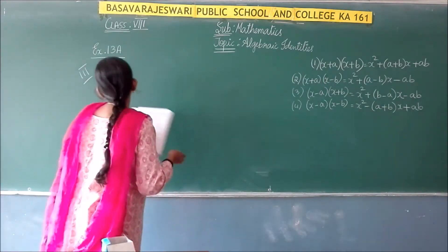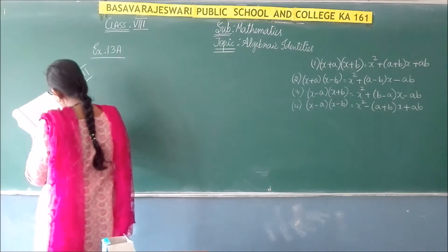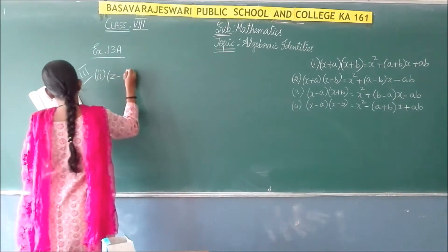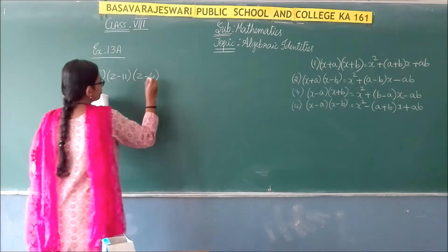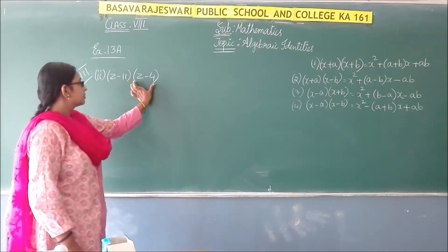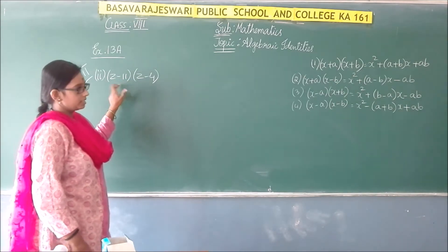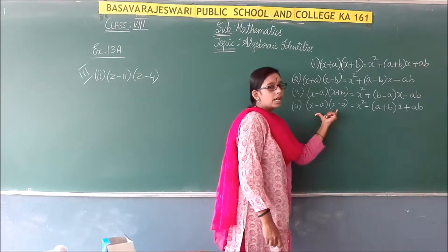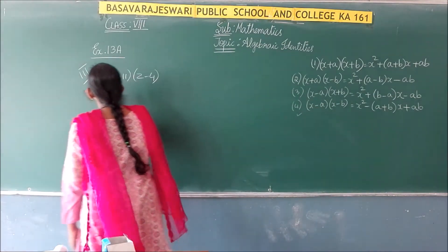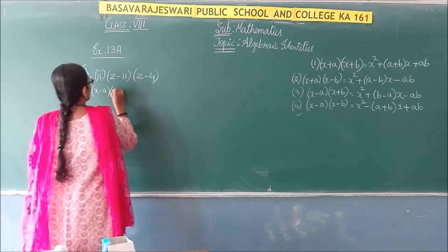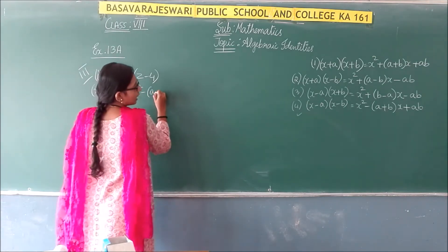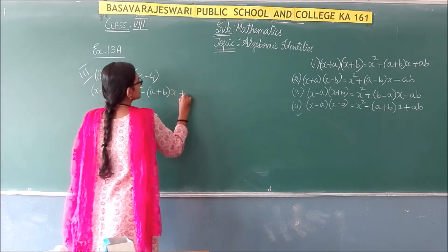Now let us start with the third main. In the third main, I am going to solve the second problem, which is (z - 11)(z - 4). If you observe, both z - 11 and z - 4 have negative signs. So we use the fourth identity: (x - a)(x - b) = x² - (a + b)x + ab.